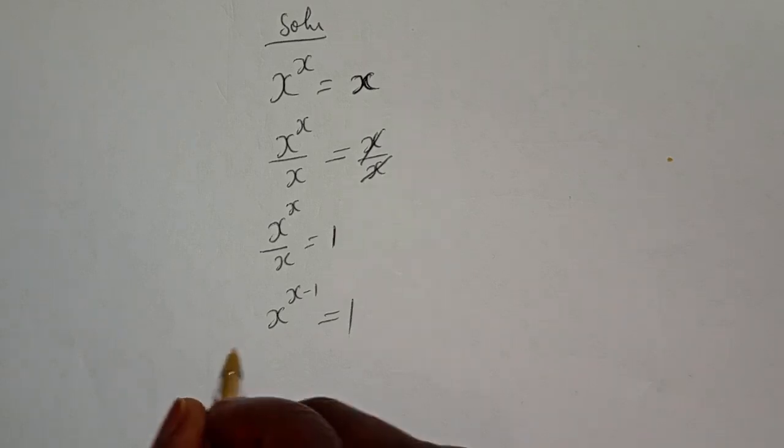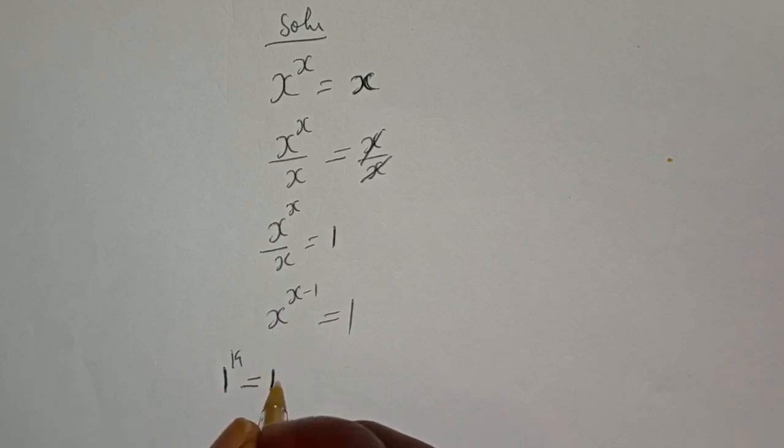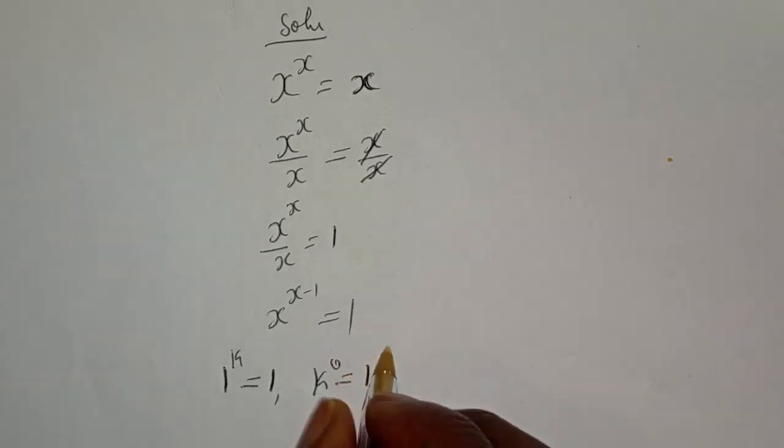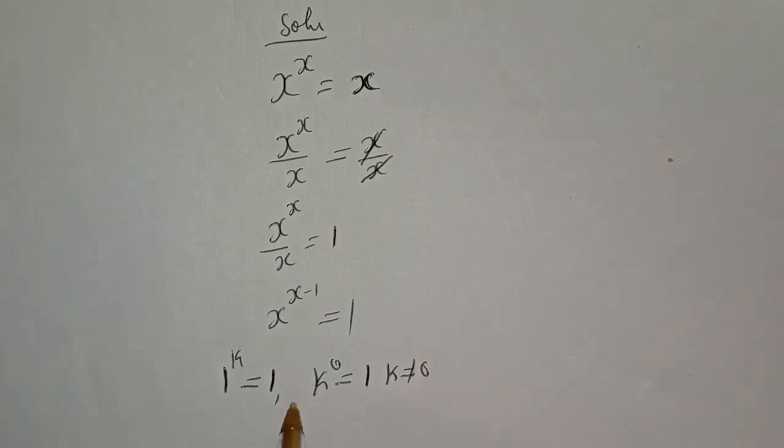Now, note from this rule that if you have 1 to the power of k, this is equal to 1. Also, if you have k to the power of 0 is equal to 1 for k is not equal to 0. So, let's call this first case, second case.